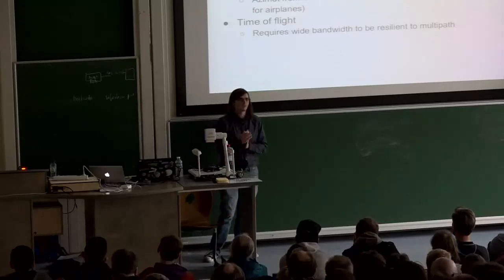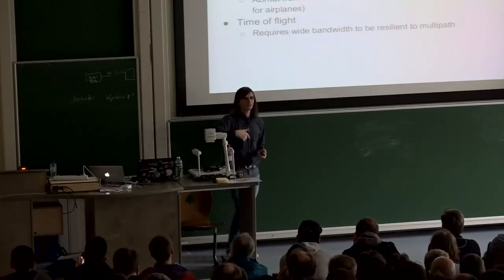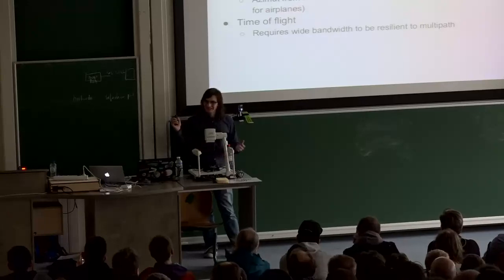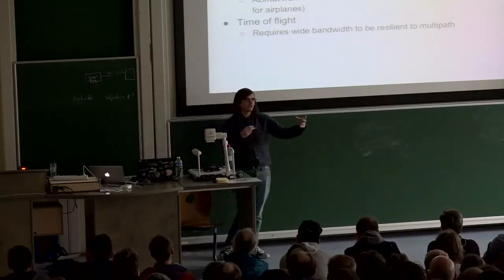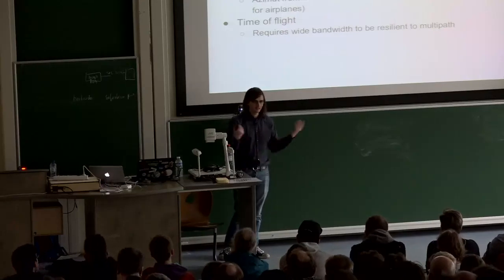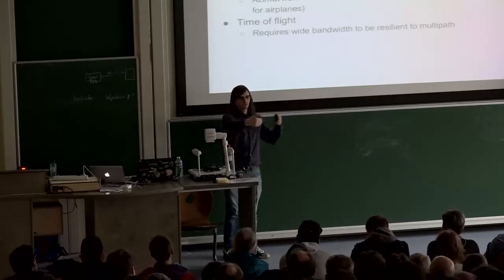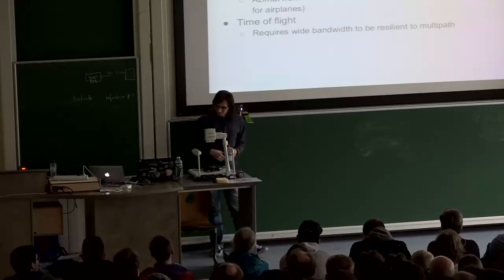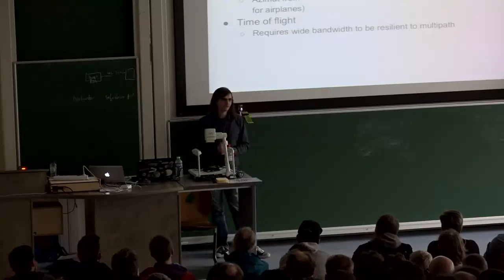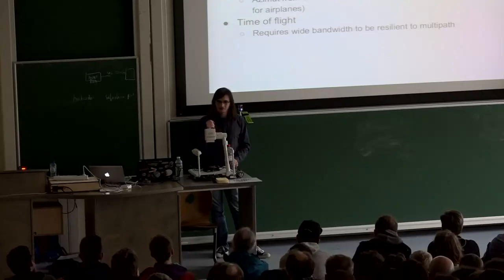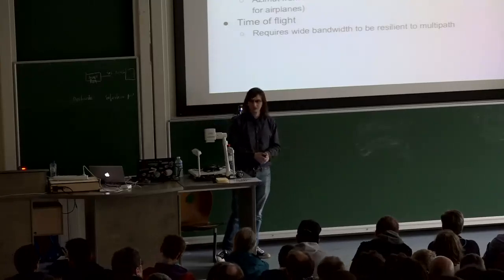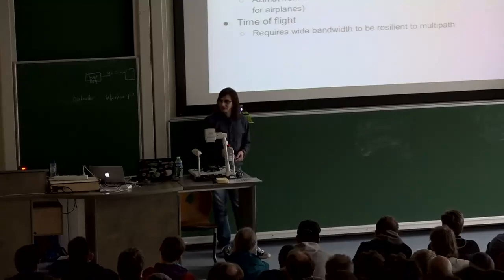Another radio approach is angle detection — either detecting the angle of arrival or looking at where you are relative to a transmitting antenna, which planes use with a rotating antenna. And finally there is time-of-flight, which is what we've been using. You measure the time it takes for a radio signal to go from transmitter to receiver. Knowing the time, you know the distance because you know the speed of light, and that allows you to get your position.